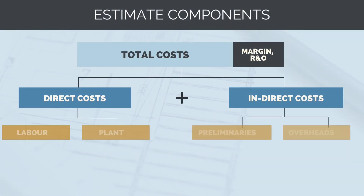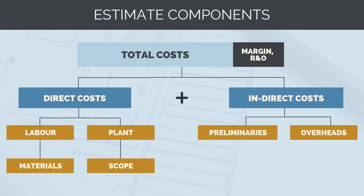Before we look at the specific steps, let's look at the components of a cost estimate. Understanding these components and how they fit together will make the process clearer. First, we have direct costs — construction costs directly associated with completing portions of the project scope. For example, if we were building a bridge, these are the costs for building the foundations, standing the structural steel, and putting in the guardrail. Direct costs are always associated with on-site physical construction works and are made up of four key components: labor, material, plant and equipment, and subcontract costs.